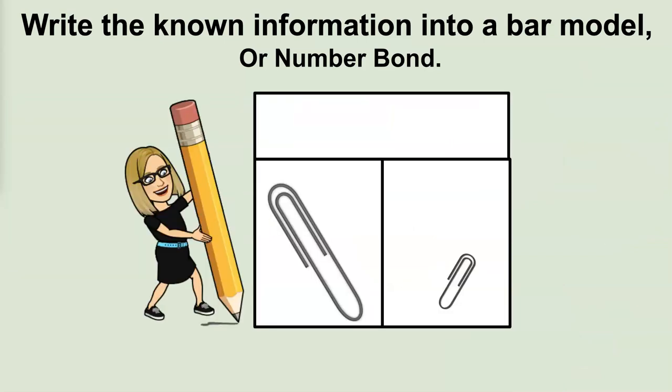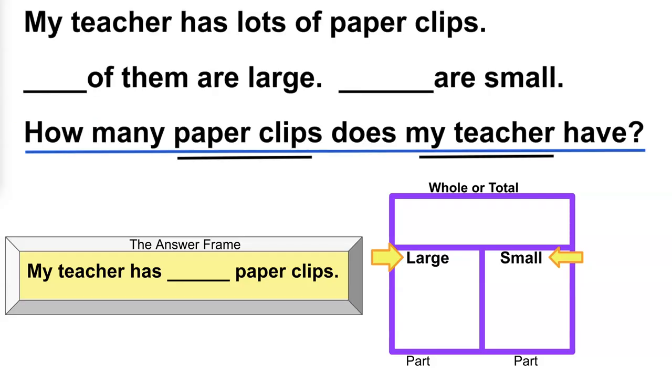I like to use the bar model because it's just easier for me to organize and draw. Now I'm thinking about my bar model and I know the two parts. One of the parts is large paperclips. One is small paperclips. It's even a good idea to label my bar chart so that I keep myself organized and I know exactly which number is represented where. So I've labeled my bar model large and small for my two parts and here I am.